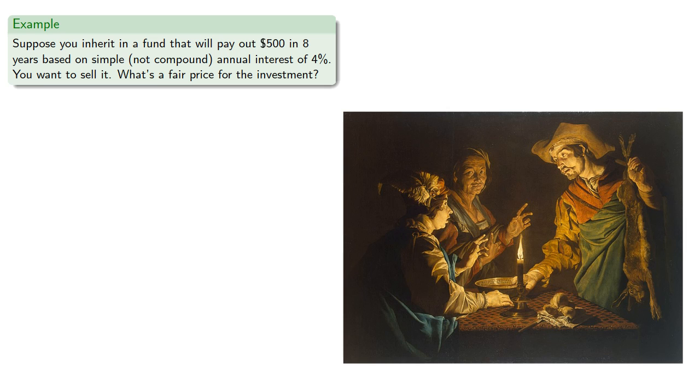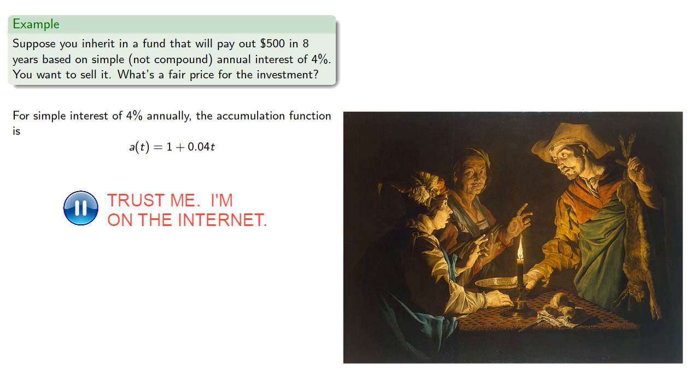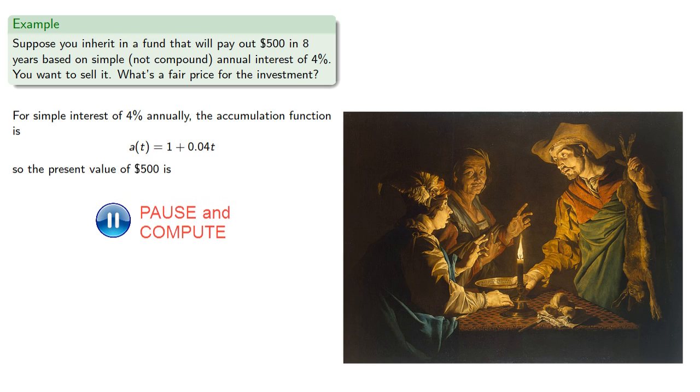For simple interest of 4% annually, the accumulation function is, so the present value of $500 will be, so a fair price to sell your inheritance today would be $378.79.